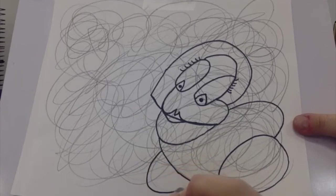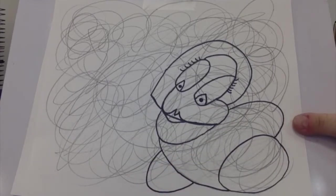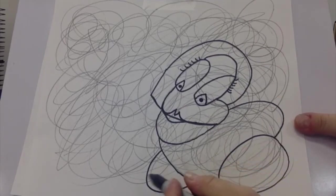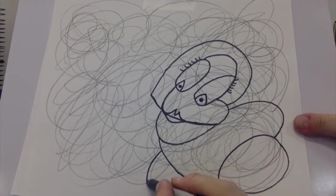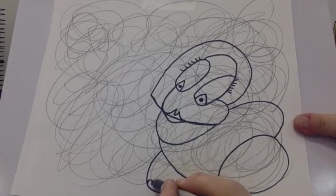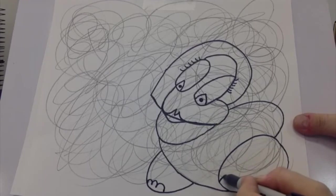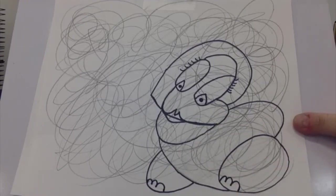And all I'm doing is tracing right on top of the scribble lines. Now I say, this may not look like feet to you, but what if I added some toes? Some other additional details that would help you see what I see.